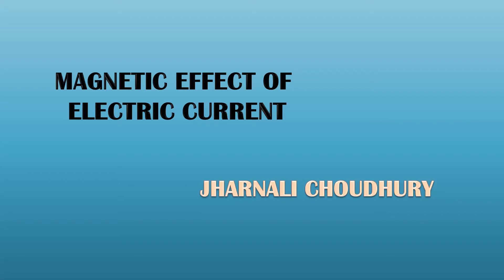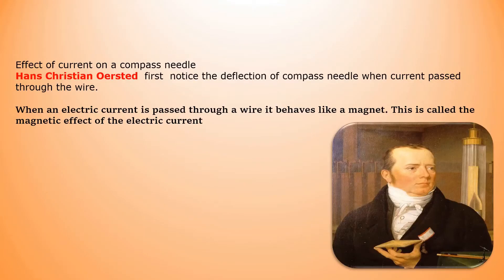Magnetic effect of electric current. The effect of current on a compass needle was first noticed by the scientist Hans Christian Oersted. He noticed the deflection of the compass needle when current passed through a wire. When electric current passes through a wire, it behaves like a magnet, and this is called the magnetic effect of electric current.